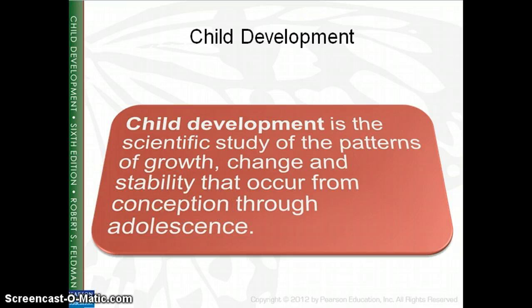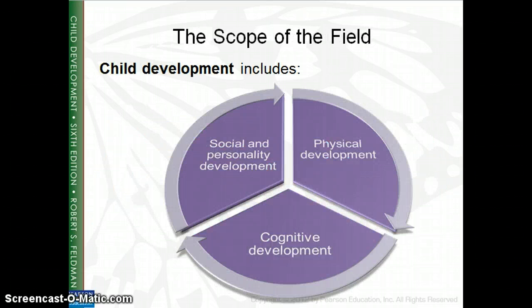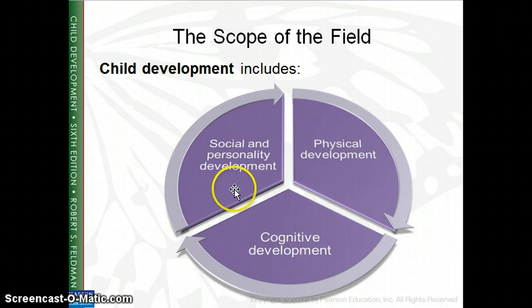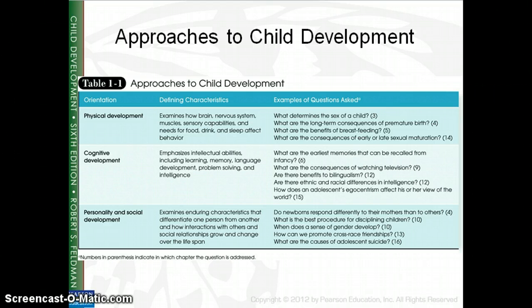Child development covers from conception all the way through adolescence, which is where most of you are right now. When we talk about the field of child development, we break it down into three different domains of development: physical development, cognitive development, and social and personality development. Physical development is talking about the physical makeup of the body. This can include everything from the brain, the nervous system, your muscles, your sight, sound, smell, touch, taste, and also things like your needs for food, drink, and sleep.